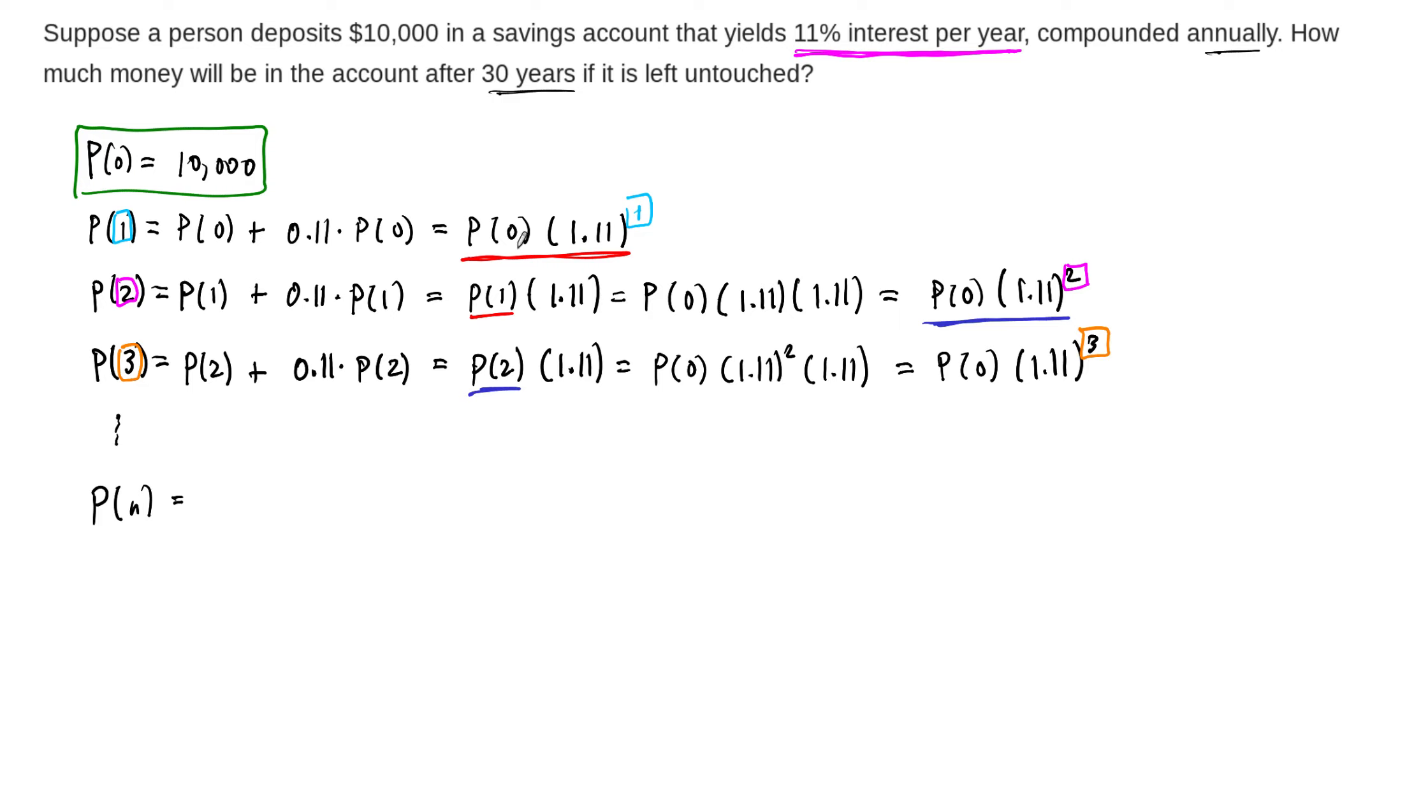We treated this like a recurrence relation, actually, because from one year to the next, the amount in our bank account depends on what was in there the previous year. But then as you stack these up, you end up seeing that this is a geometric progression, where our P(n) is equal to our initial investment, P(0), times the interest rate, which is 1.11. So the 0.11 is the interest itself, but we need to keep our principal, so 1.11 to the power n. And that right there is a formula, a closed formula, to compute the amount of money in our bank account after n years.